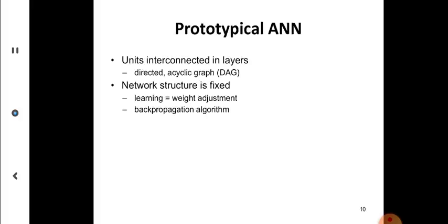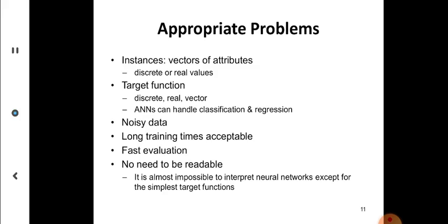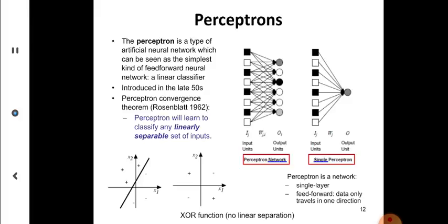Prototypical neurons are interconnected in layers, network architecture is fixed. Learning is weight adjustment. Back propagation algorithm for appropriate problems. Instances are vectors of attributes, discrete or real valued. Target function can be discrete, real or vector. Maybe noisy data. Long training time is acceptable. Fast evaluation and no need to be readable.